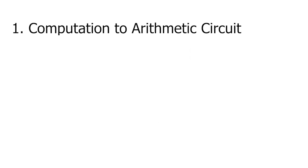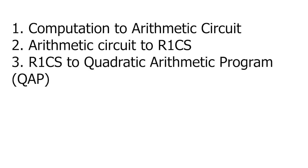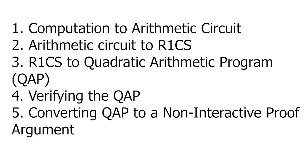The process can be summarized as: computation to arithmetic circuit, which we showed; arithmetic circuit to R1CS, which we mentioned; R1CS to quadratic arithmetic program (QAP), which we mentioned; verifying the QAP, which we did a basic example of with the division of the polynomial and target polynomial; converting QAP to a non-interactive proof argument.